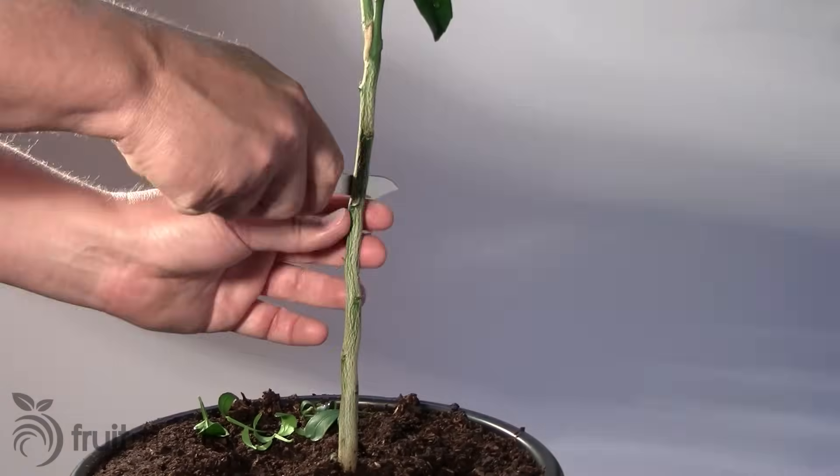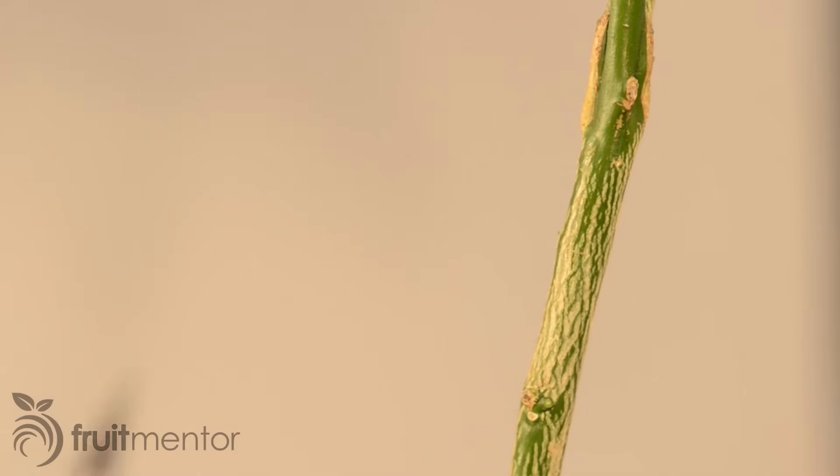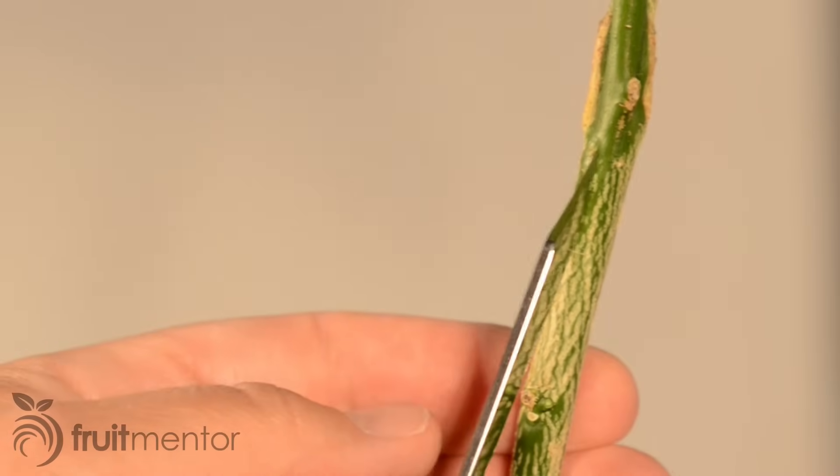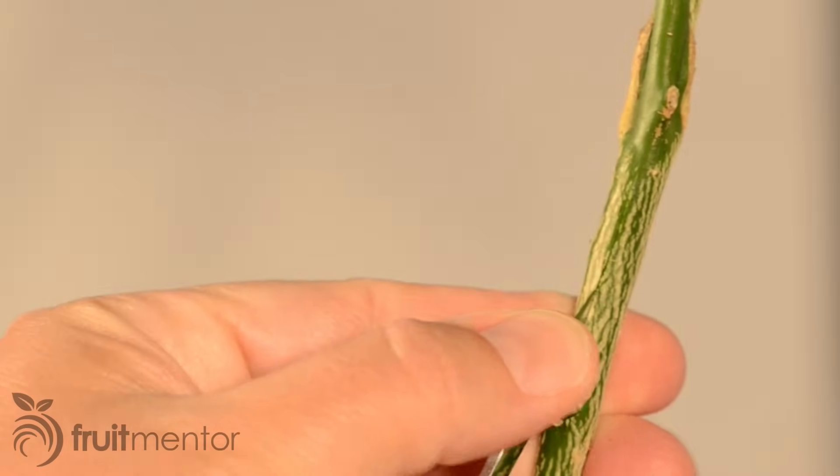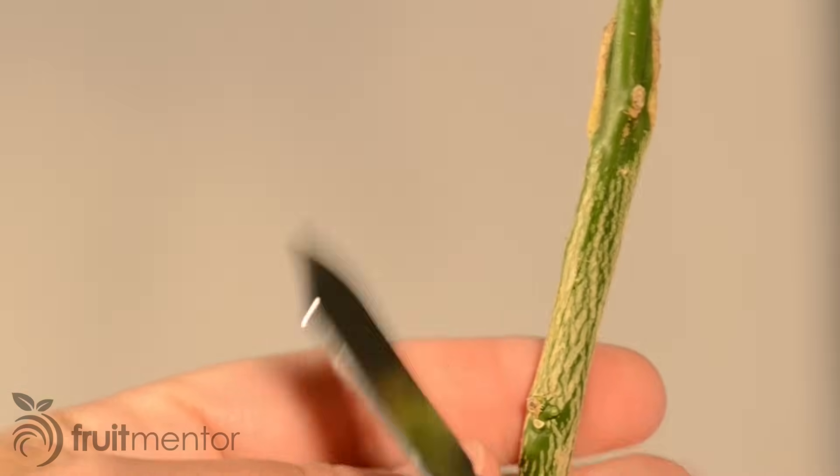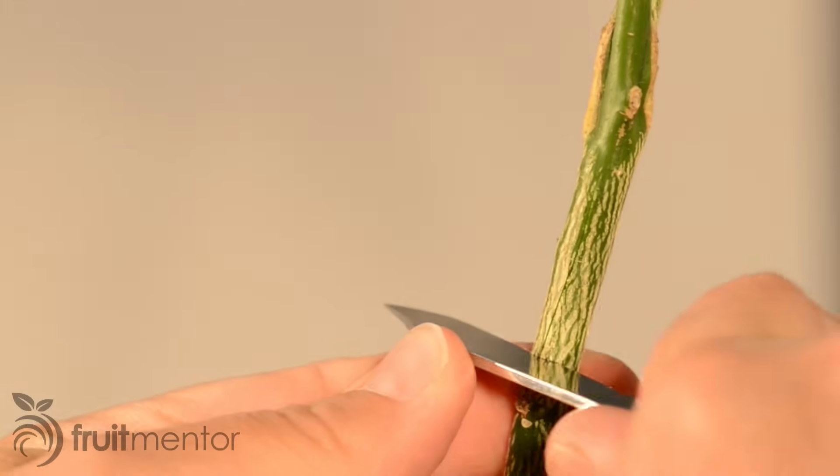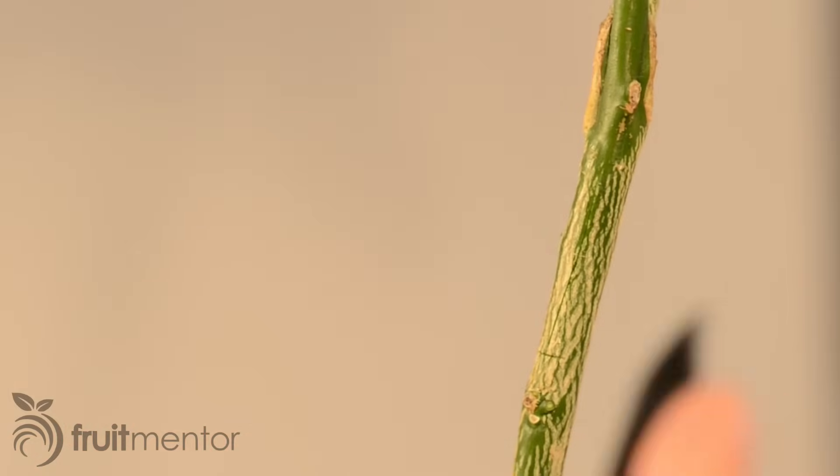First, I remove the leaves and thorns from the rootstock. I cut an upside-down T into the rootstock. An upright T will also work. The advantage of an upside-down T is that it can help to keep water out. This may produce better results in a rainy area.